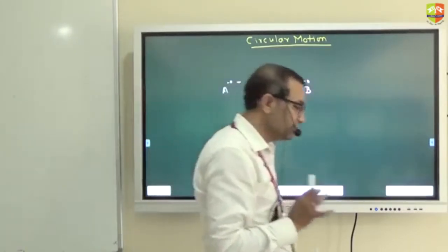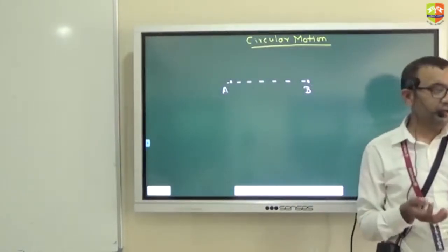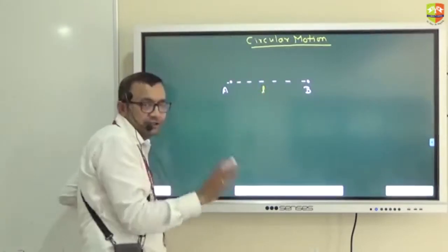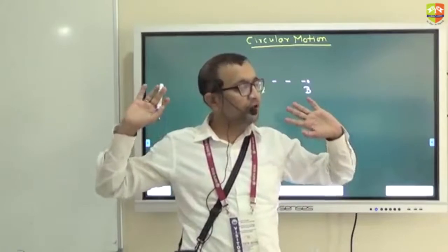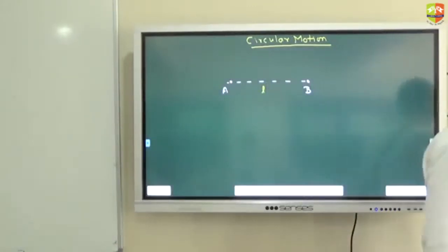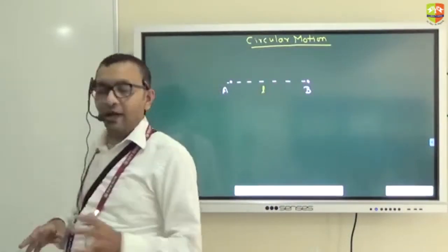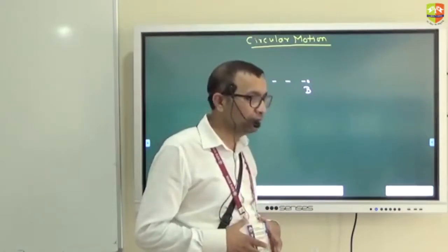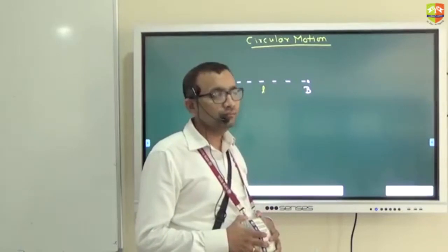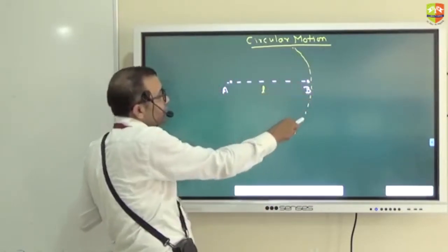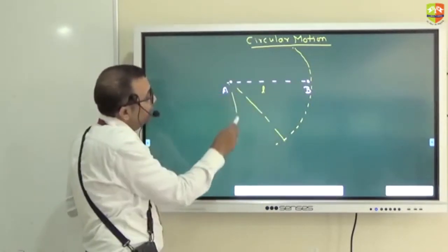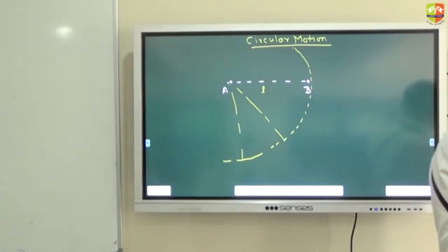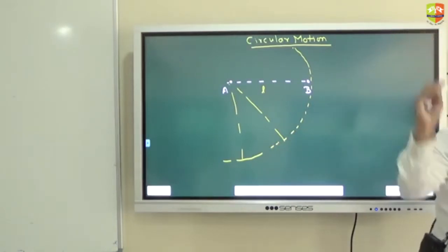I have taken the fan just as an example - it need not be just a fan. If A and B are two points, and the distance between A and B is fixed - let's say L - that distance cannot increase and cannot decrease. Can point B move relative to A if the distance is fixed? B has no other option but to move in a circle. So when the distance between two points is fixed, if one point has to move relative to the other, it will be a circle only.